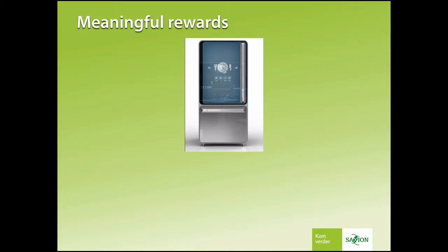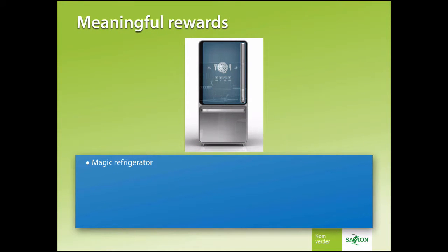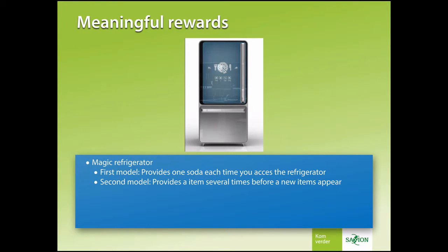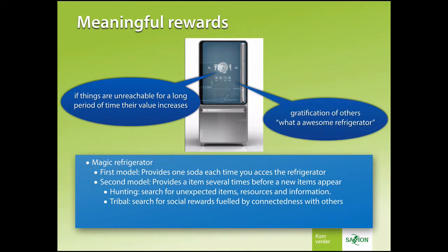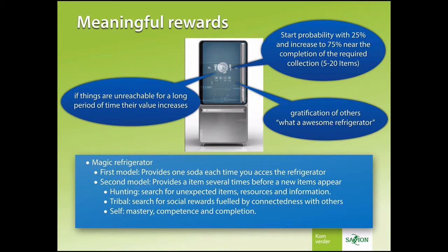Imagine you're participating in a contest and winning a magic refrigerator. The first model provides a soda each time you open the door. But after a few weeks you get an upgrade — the refrigerator now provides the same soda several times before a new item appears, like a pizza or maybe a burger. This triggers hunting. If items are unreachable for a long period of time, their value will increase. People will visit your house and admire the magic refrigerator — that's your tribal component. If you're able to predict what kind of item appears, you achieve mastery. Start with 25% probability and increase that to 75% probability near the completion of the required collection.